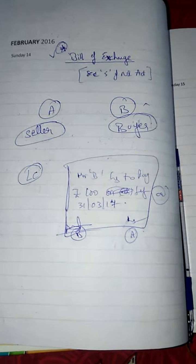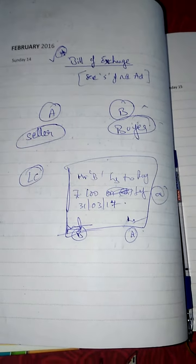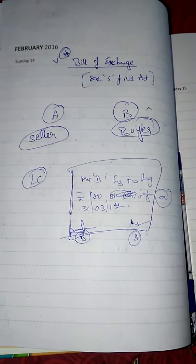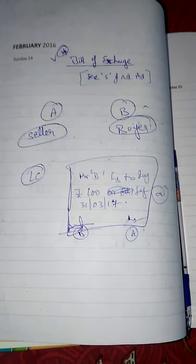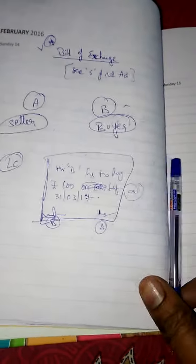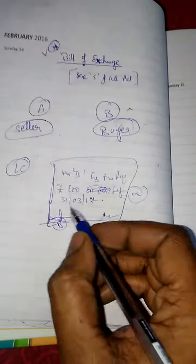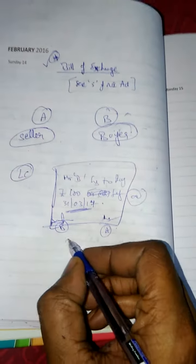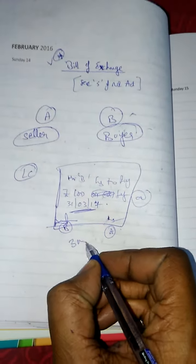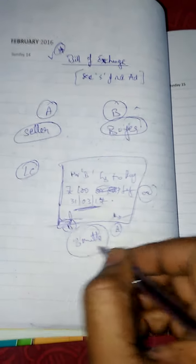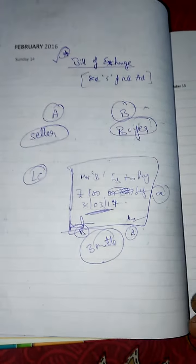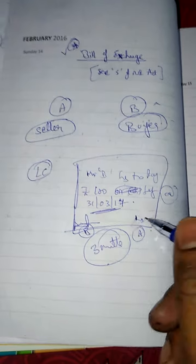Now A holds this bill — a bill accepted by B — which says that A will receive the amount of rupees 100. This payment of 100 is being received after 3 months. A can hold this bill for 3 months and then get the payment of 100 from B.